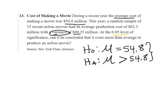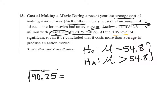Variance is important because in all of our formulas we are going to want the standard deviation. We have to remember that the square root of the variance is the standard deviation. So, the square root of 90.25 is equal to 9.5. We're keeping the units in millions.